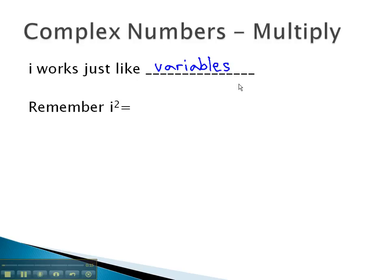There is one small exception that we need to remember as we simplify, is that i squared always equals negative 1. Anytime we have an i squared in our answer, we'll simplify the i squared term by making it into a negative 1 factor.